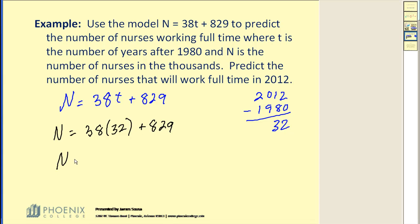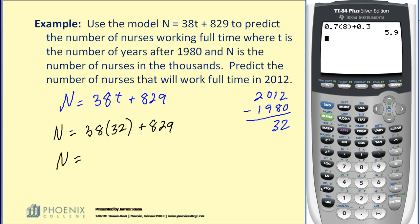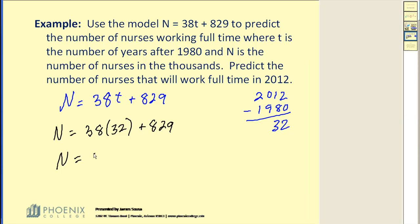And let's go to our calculator to simplify this. That's 38 times 32 plus 829, which equals 2,045.